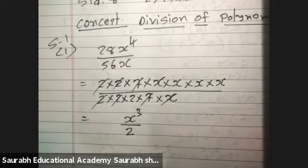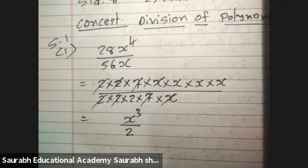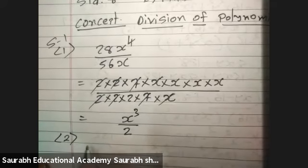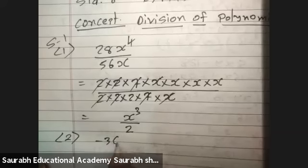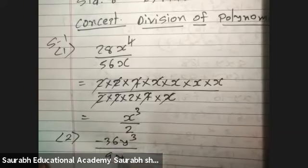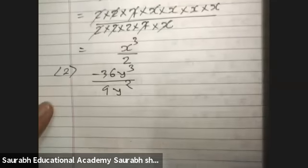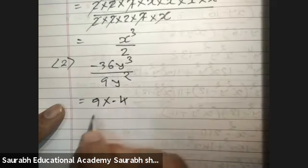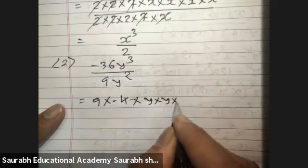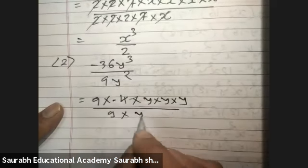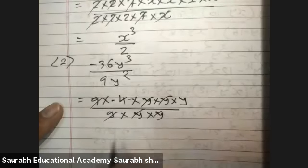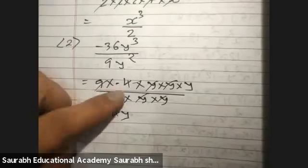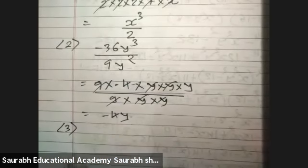This Exercise 14.3 and 14.4 are both easy — the tough part is over. Second one: minus 36y cube divided by 9y square. So here I can write 9 times 4 into y into y into y, upon 9 into y into y. 9 and 9 cut, y y y y y cut, so the answer will be minus 4y.